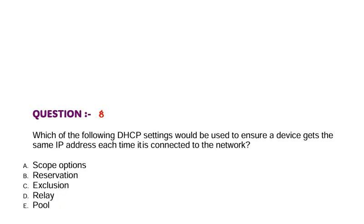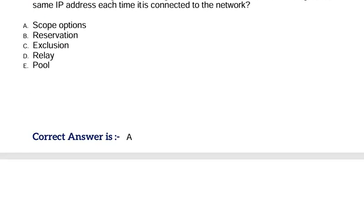Question: Which of the following DHCP settings would be used to ensure a device gets the same IP address each time it is connected to the network? Option A, scope options. Option B, reservation. Option C, exclusion. Option D, relay. Option E, pool. Correct answer is Option A.